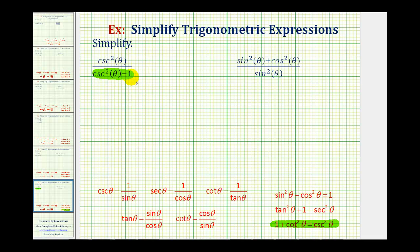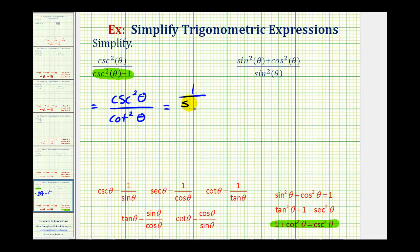Notice how that would eliminate the difference in the denominator, so let's go ahead and do that. We'll have cosecant squared theta divided by cotangent squared theta. From here, we'll convert to sines and cosines. Since cosecant is equal to one divided by sine theta, cosecant squared theta would be one over sine squared theta. And since cotangent theta is equal to cosine theta over sine theta, cotangent squared theta will be cosine squared theta divided by sine squared theta.